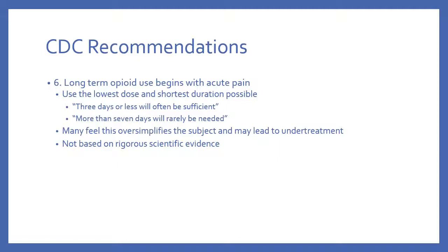Sixth recommendation: long-term opioid use begins with acute pain, so try to use the shortest duration and lowest dose possible — which is where the three- and seven-day limits came from. The CDC says three days or less will often be sufficient for acute pain, and more than seven days will rarely be needed. A lot of criticism argues this oversimplifies a very complex subject and isn't based on rigorous scientific evidence. This is now affecting corporate pharmacy practice and state legislation, and seven days may not be appropriate for all patients — undertreated patients may treat themselves, which leads to addiction issues.